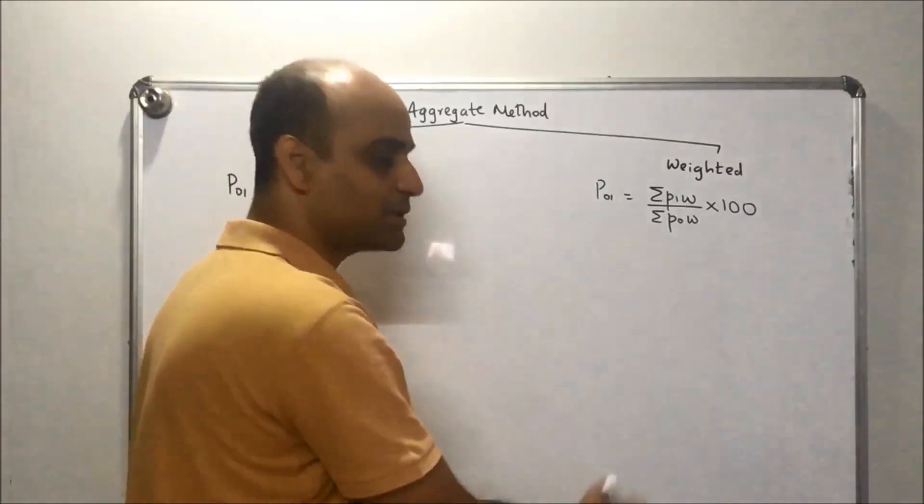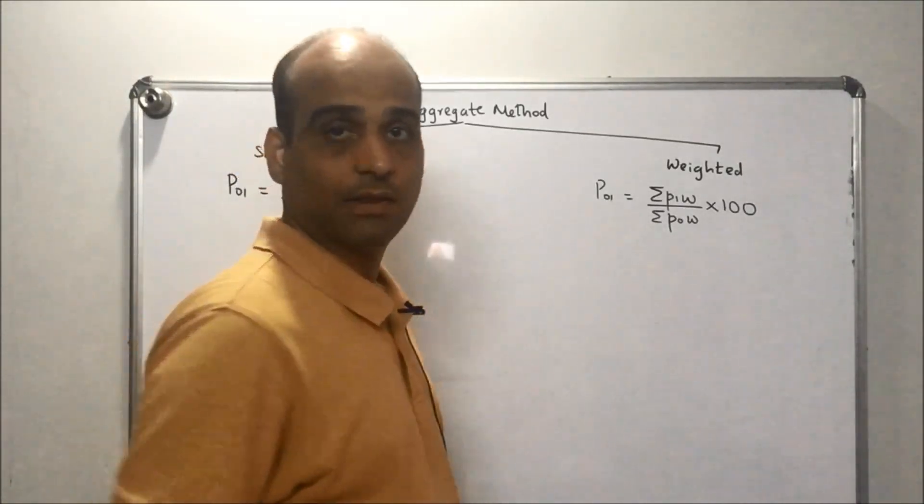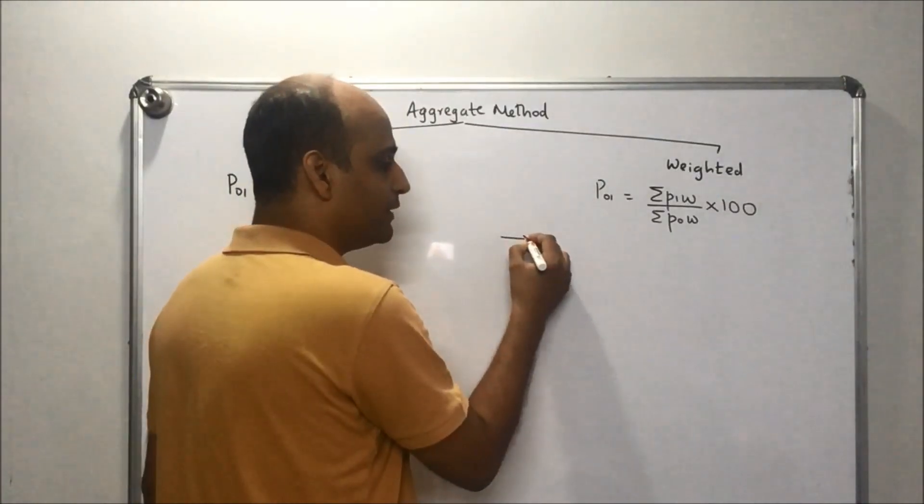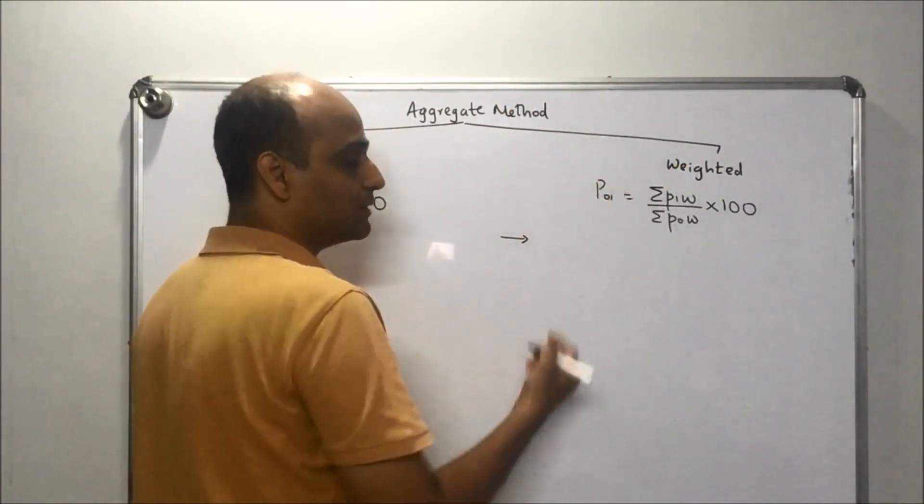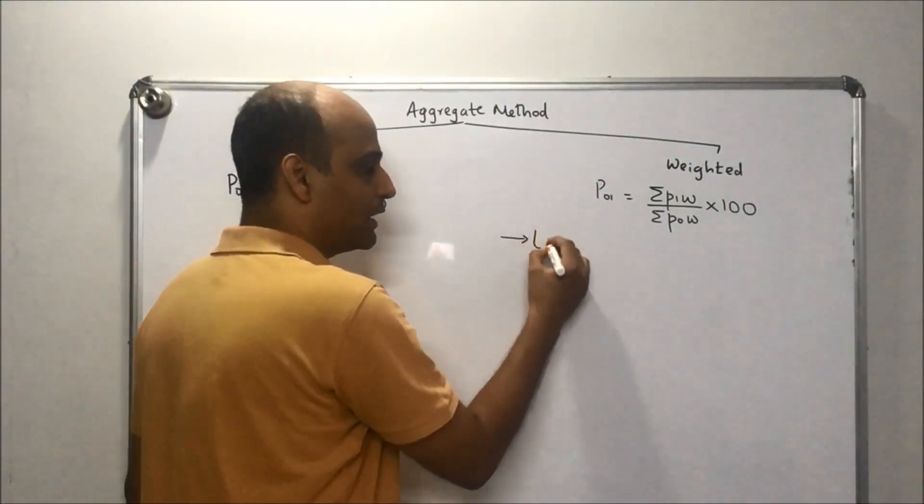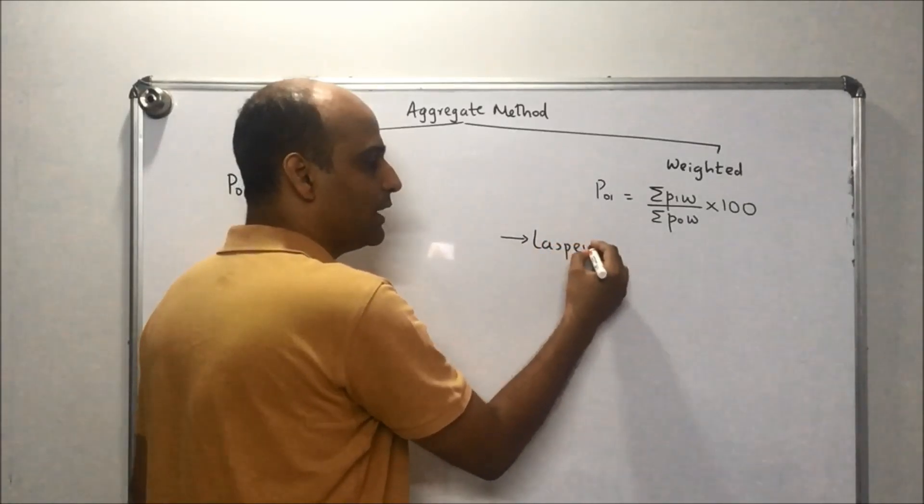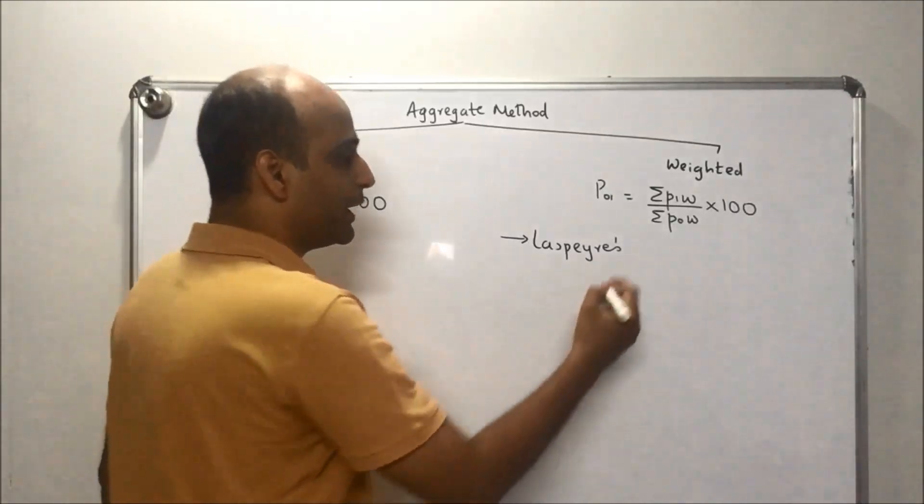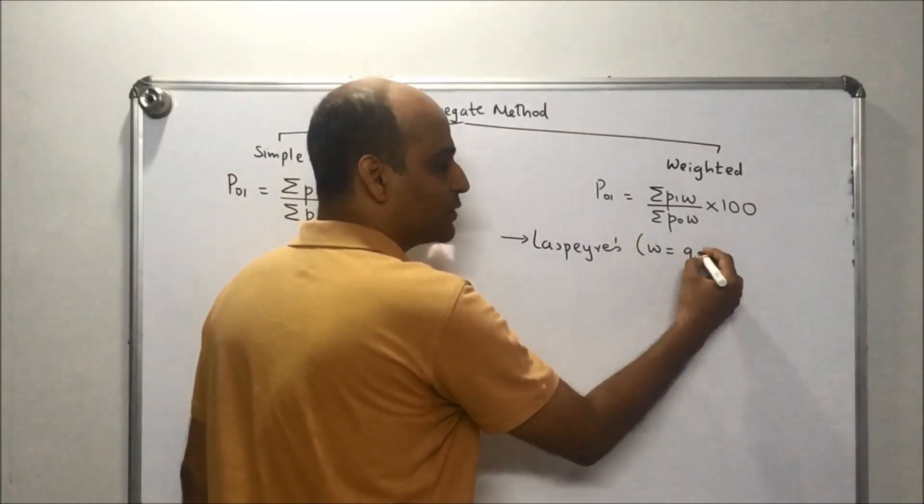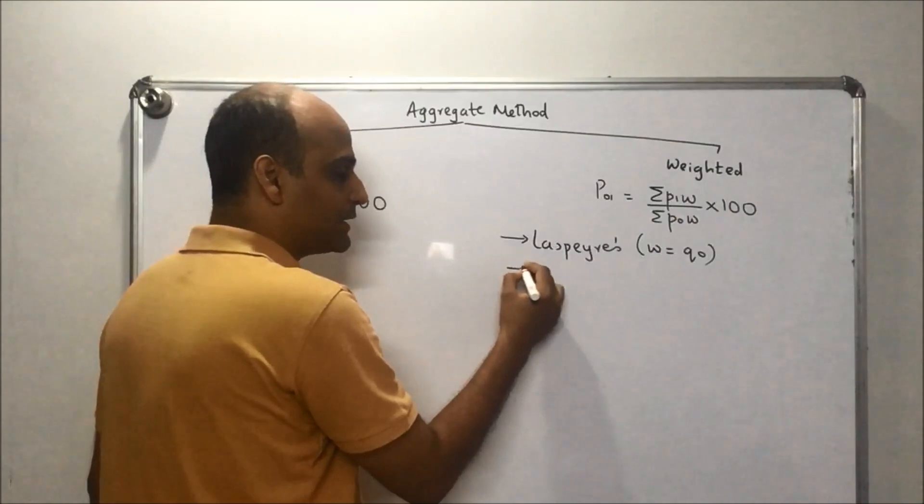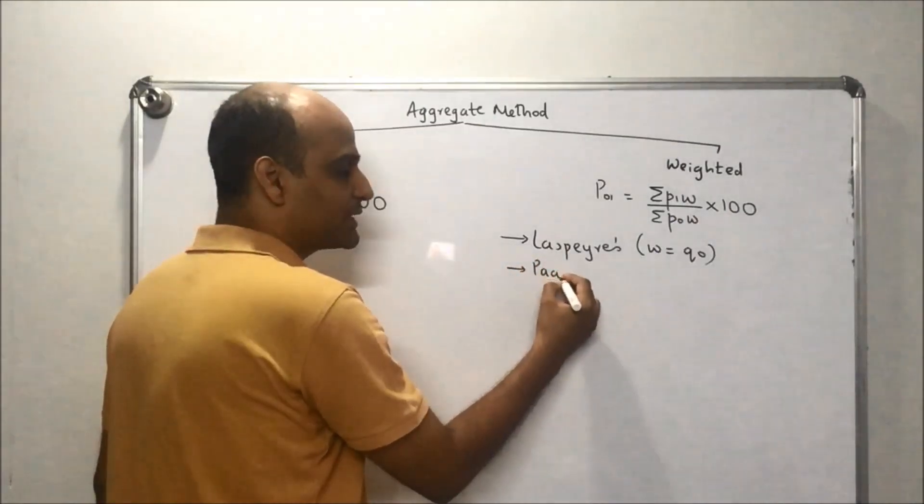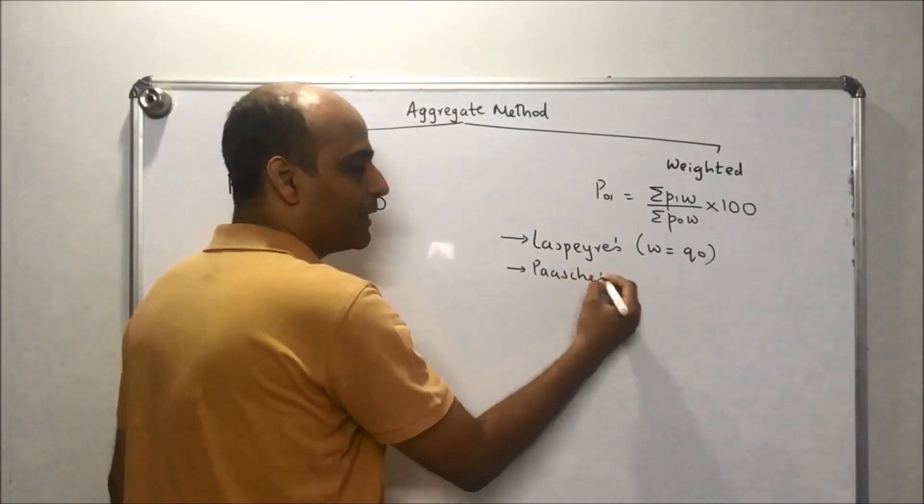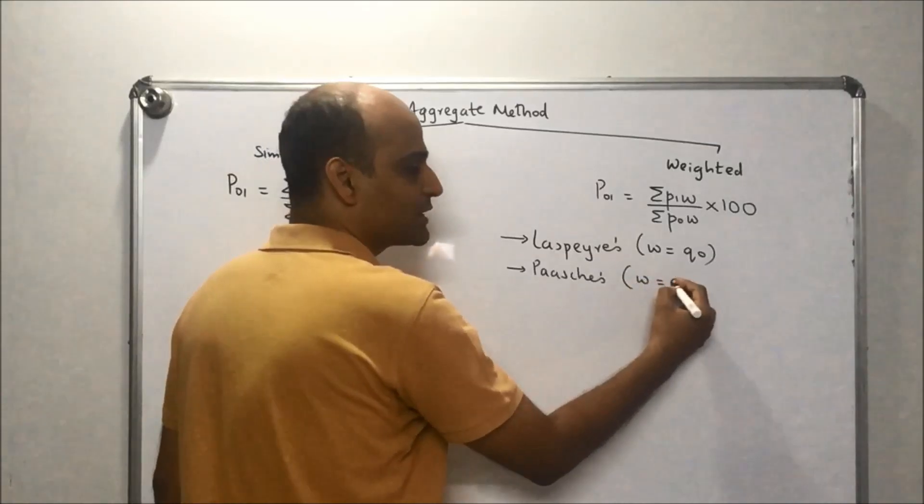Under weighted, we have a list of formulae depending upon what weights we consider. The various weighted aggregate price indices are: first, the Laspeyres price index, wherein weightage is taken as Q₀.